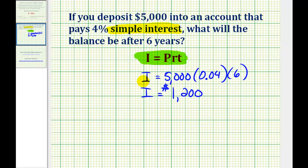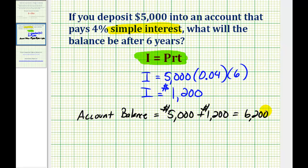So the ending account balance is equal to the starting balance of $5,000 plus the interest of $1,200. So the actual account balance after six years is $6,200.